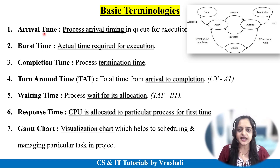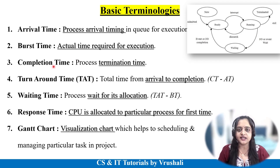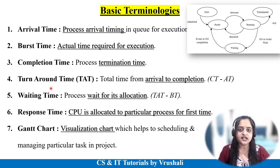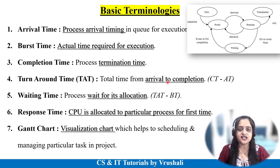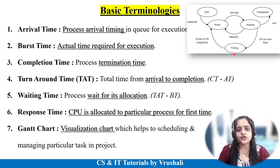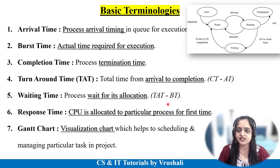Here processes are waiting for CPU allocation. Arrival time is when a process arrives in the ready queue for execution. Burst time means the actual time required for execution. Completion time is when your process completes execution and goes to the terminated state. Turnaround time is the total time from arrival to completion, and the formula is: completion time minus arrival time. Waiting time is when due to some interruption your process goes to the waiting state, and the formula is: turnaround time minus burst time.